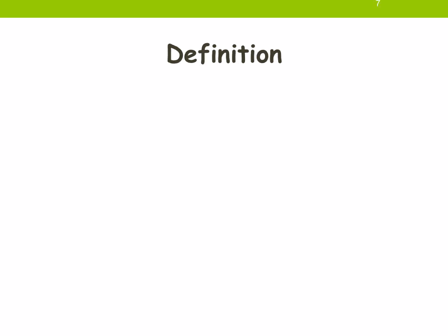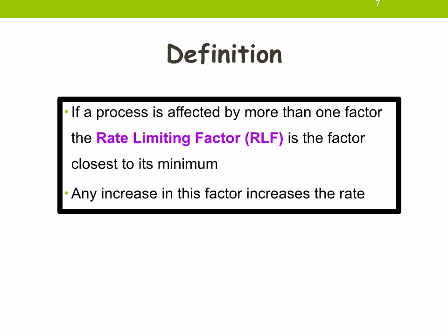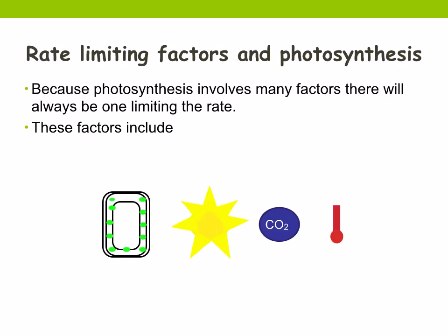So what is the definition of a rate-limiting factor? If a process is affected by more than one factor — for example, photosynthesis is affected by light intensity and carbon dioxide concentration — the rate-limiting factor is the factor closest to its minimum. Any increase in this factor increases the rate. Because photosynthesis involves many factors, there will always be one limiting the rate. These factors include the number of chloroplasts, light intensity, carbon dioxide concentration, and temperature.